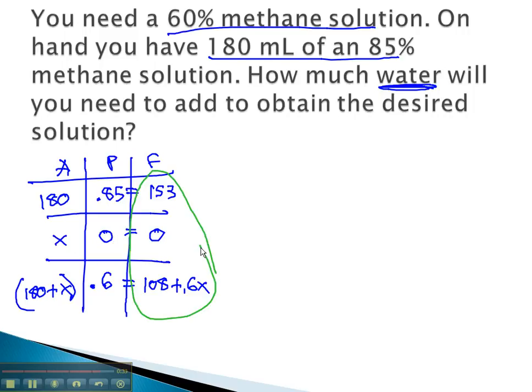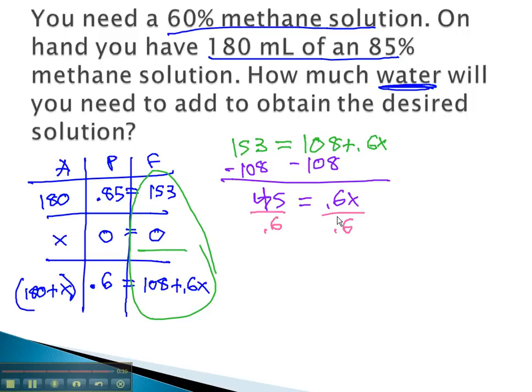With only one variable, we get our equation from the last column. 153 plus 0 equals 108 plus 0.6x. Subtract 108 from both sides, and we get 45 equals 0.6x. Divide both sides by 0.6, and we end up with x. The amount to add is 75 milliliters of water.